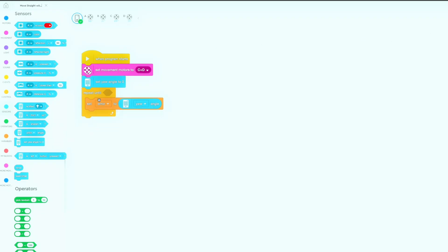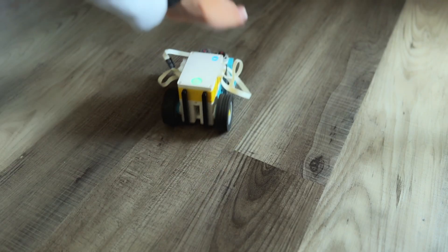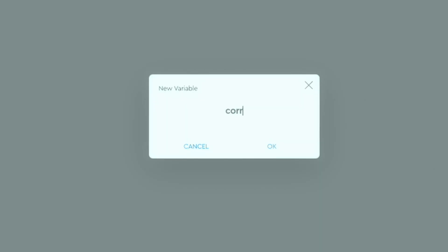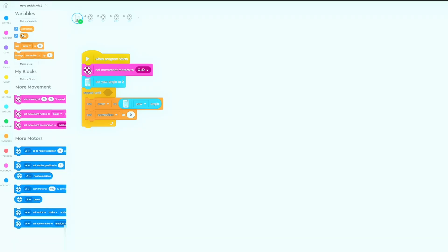Number five, compute correction. We'll go back into the variable tab and make a new variable called correction. This will be the adjustment from the deviation. We'll multiply this value by a proportional constant. This determines how much correction we will apply to each motor.